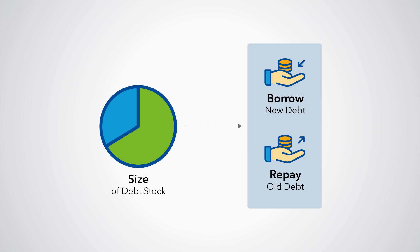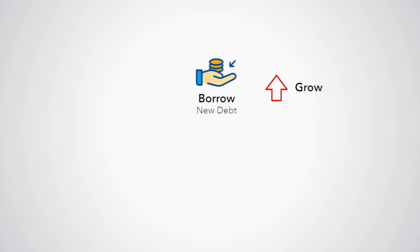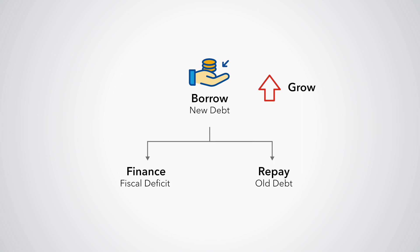These debt flows — that is, borrowing and repayment of debt which happen over time — cause the stock of debt to either grow or to shrink. Typically, the stock of debt grows over time as new borrowing is undertaken to finance the fiscal deficit and to repay all debt.